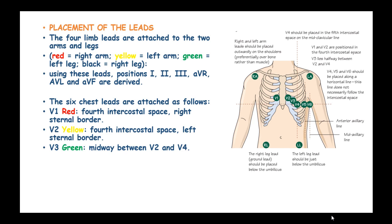V3 is green and attached midway between V2 and V4. V4 is brown and is attached to the fifth intercostal space, left mid-clavicular line.